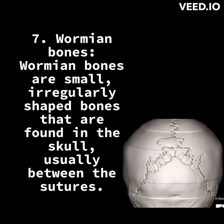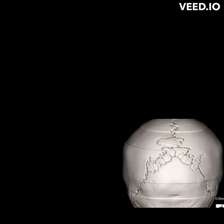7. Wormian bones. Wormian bones are small, irregularly shaped bones that are found in the skull, usually between the sutures. You can see there is one on the wrist.